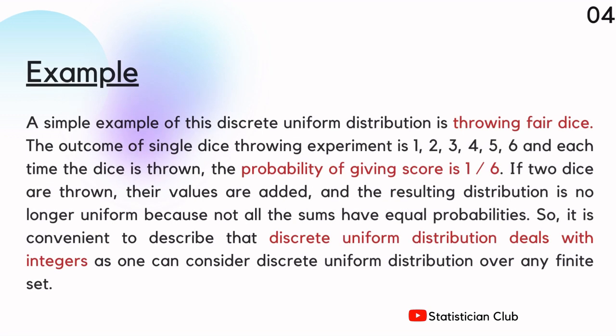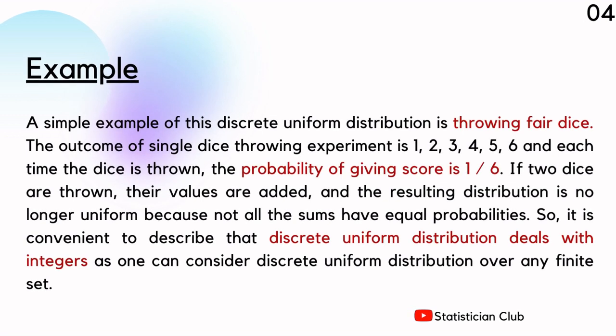Here is an example of Discrete Uniform Distribution. Throwing a fair dice is an example of Discrete Uniform Distribution. When you throw a dice, the outcome will be 1, 2, 3, 4, 5, or 6.